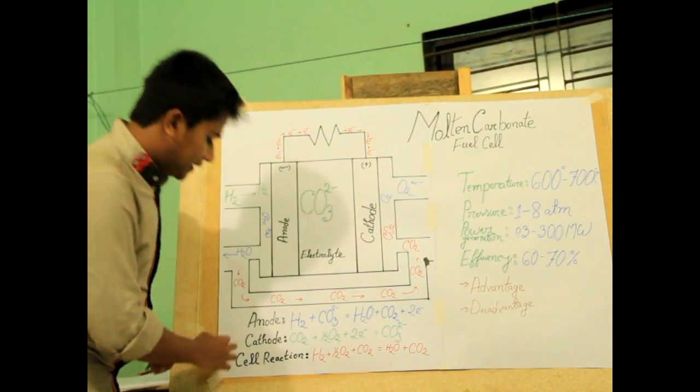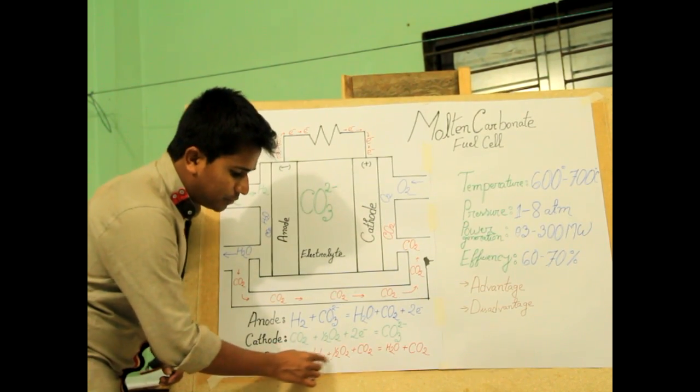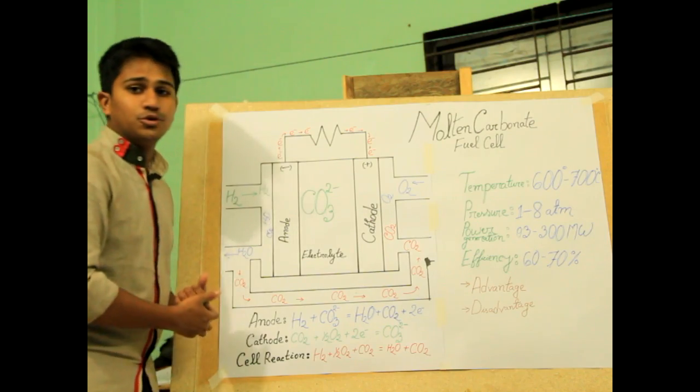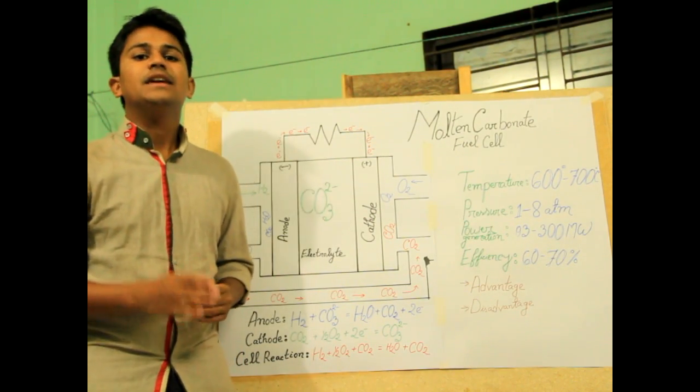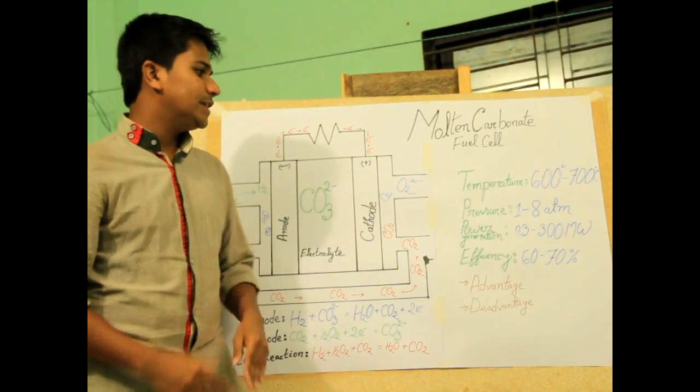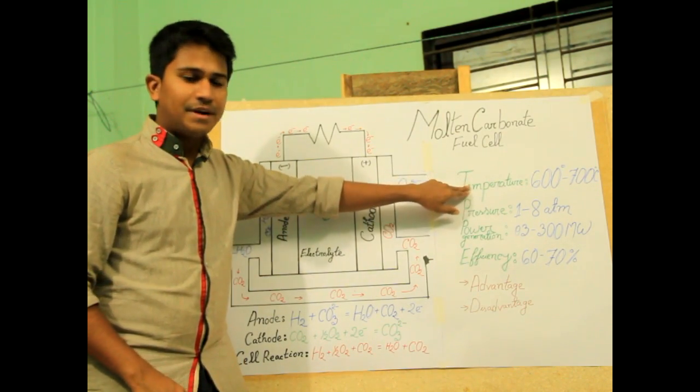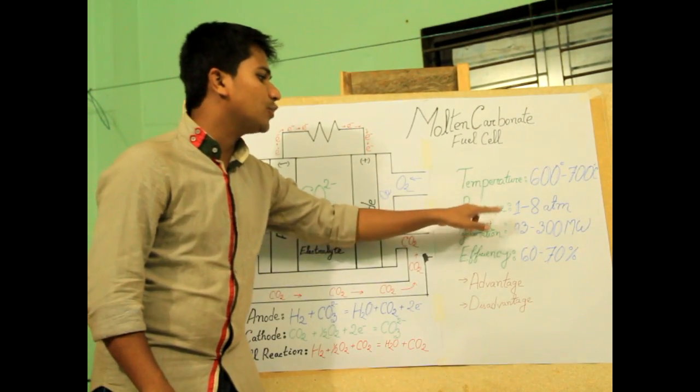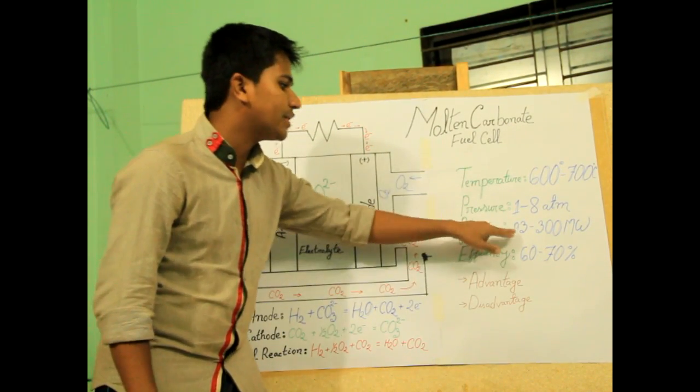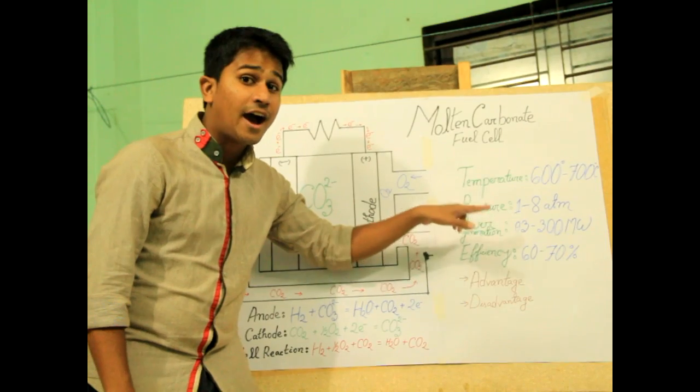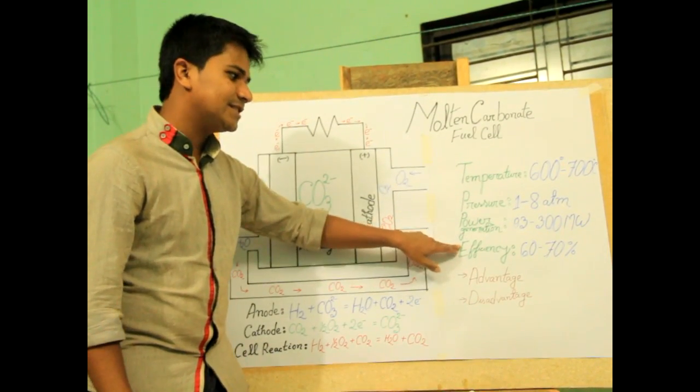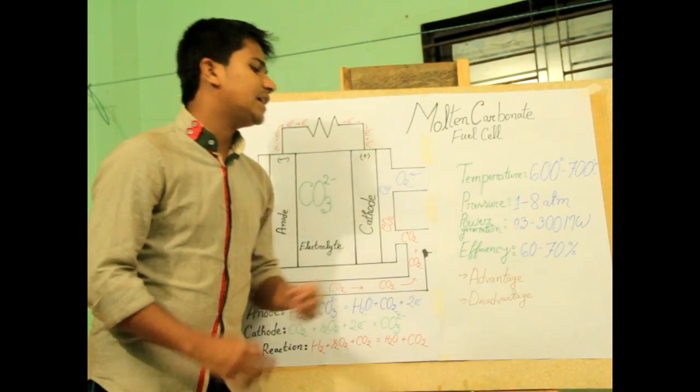Now, the cell reaction is H2 plus half O2 plus CO2 equals to H2O plus CO2. Now, there are some characteristics of molten carbonate fuel cell. Here there is a temperature of 600 to 700 degrees Celsius, pressure 1 to 8 atmospheres, power generation 0.3 to 300 megawatts which is immense, and the efficiency is 60 to 70 percent.